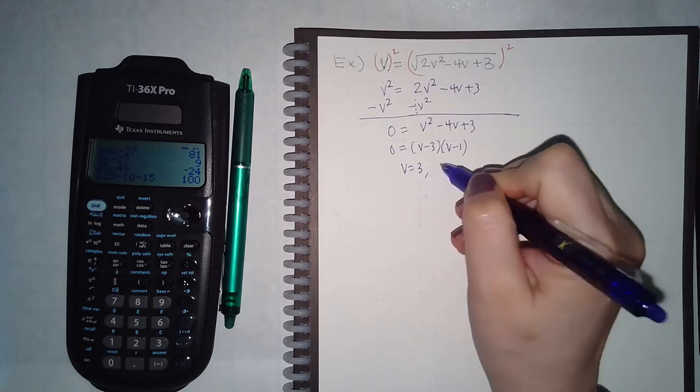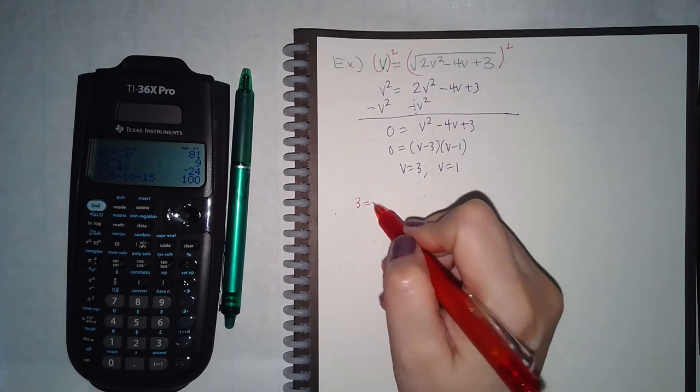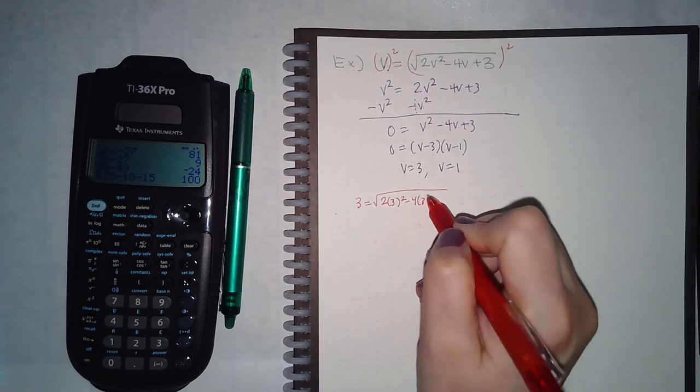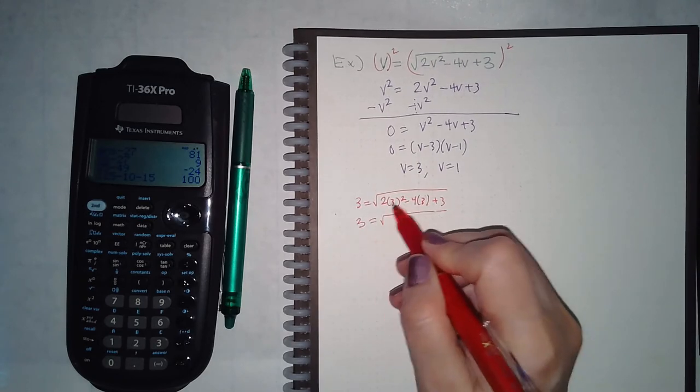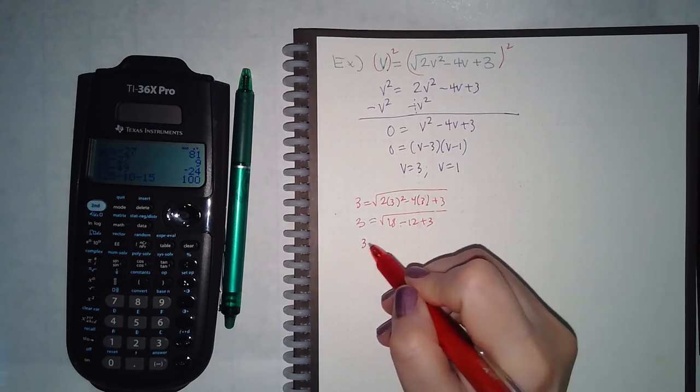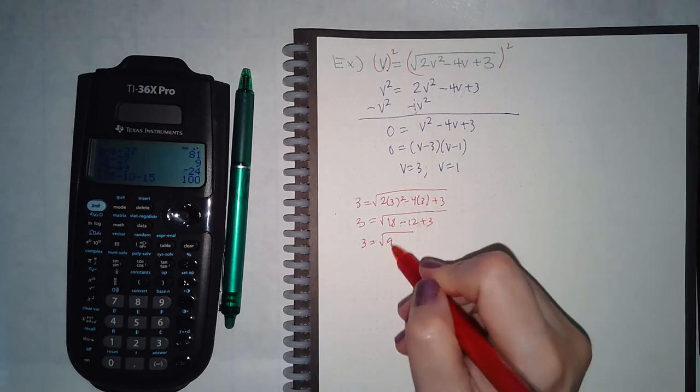So I get 3 and I get positive 1, and if I check both of those. That's 9, 18, 2, 3, that's 9. So 3 checks out.